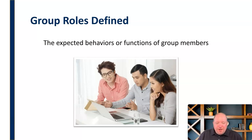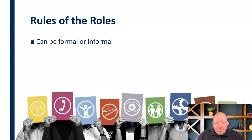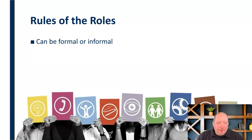Before we get into actual roles, let's cover some things we need to understand about roles in general. First of all, these roles can be formal or informal. They don't have to be things that are explicitly outlined. Sometimes you identify somebody as the leader and say you are the person responsible for keeping us accountable. But much more often we see informal roles within a group — things that people just kind of take on. Somebody's the group therapist or the class clown. Those informal roles are not specifically identified by the group, but they still can perform a very important function.